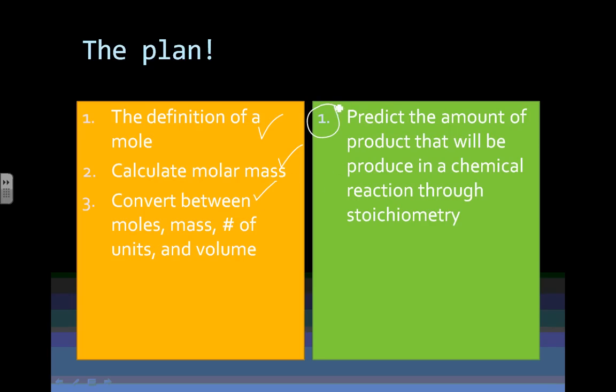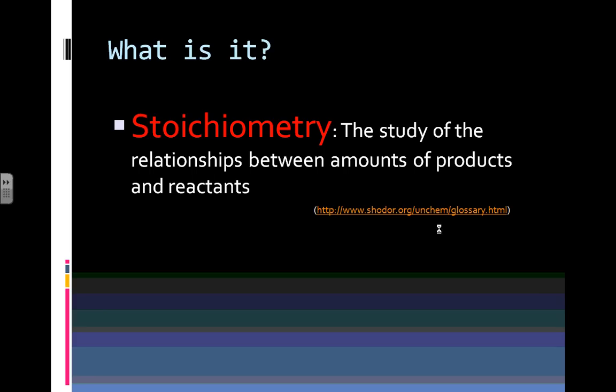What we're going to learn today is one big task and it is to predict the amount of product that will be produced in a chemical reaction through stoichiometry. This is what we're doing today, stoichiometry.